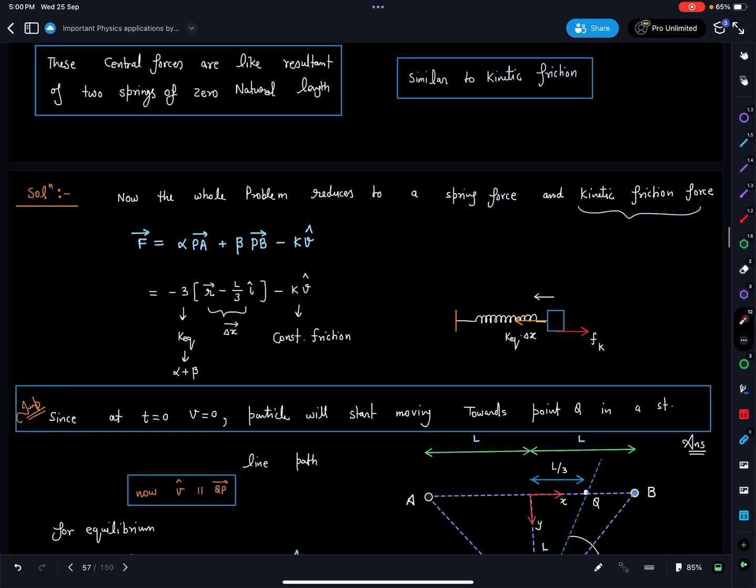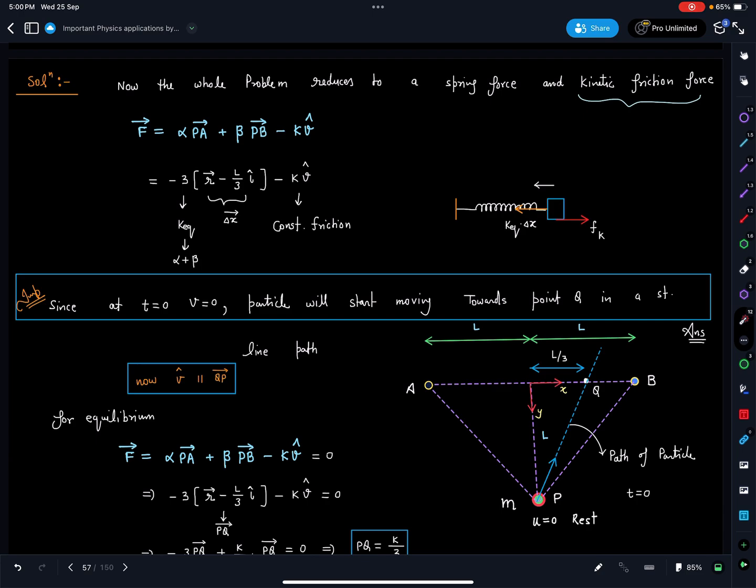For us, it is like an equivalent spring and a friction force. Basically, it will oscillate with decreasing amplitude you can say, and it is released from one of the extreme positions. So you can see this I have written here: K equivalent is alpha plus beta, basically for this particular case, because here also some r part will come, here also some r part will come, so this will become alpha plus beta which is this part.